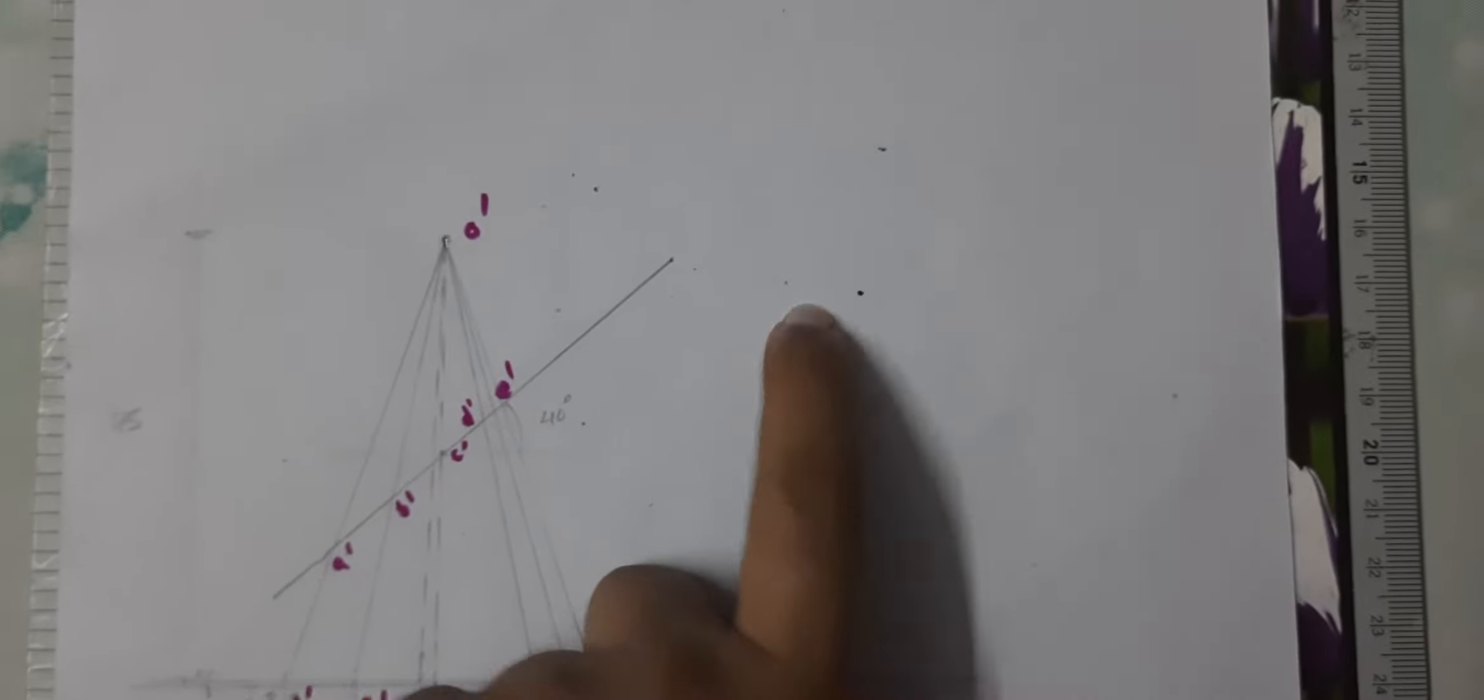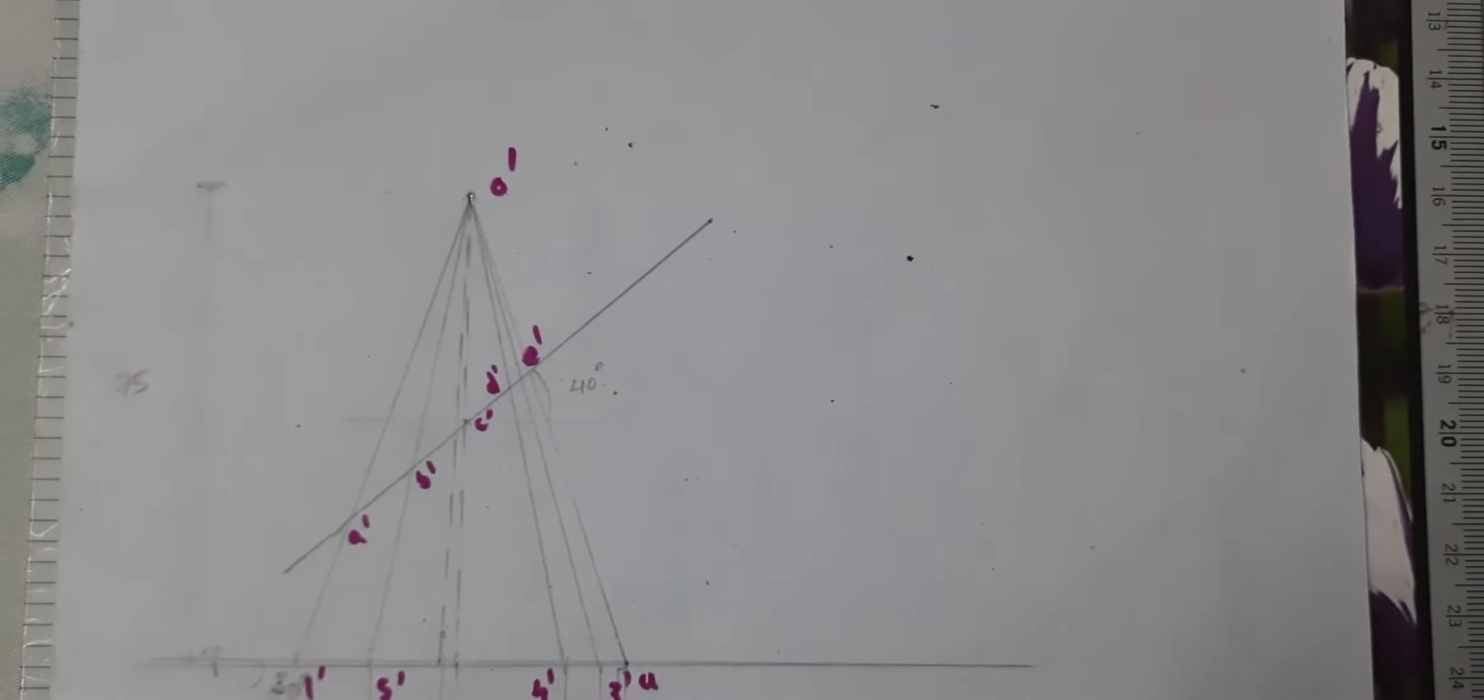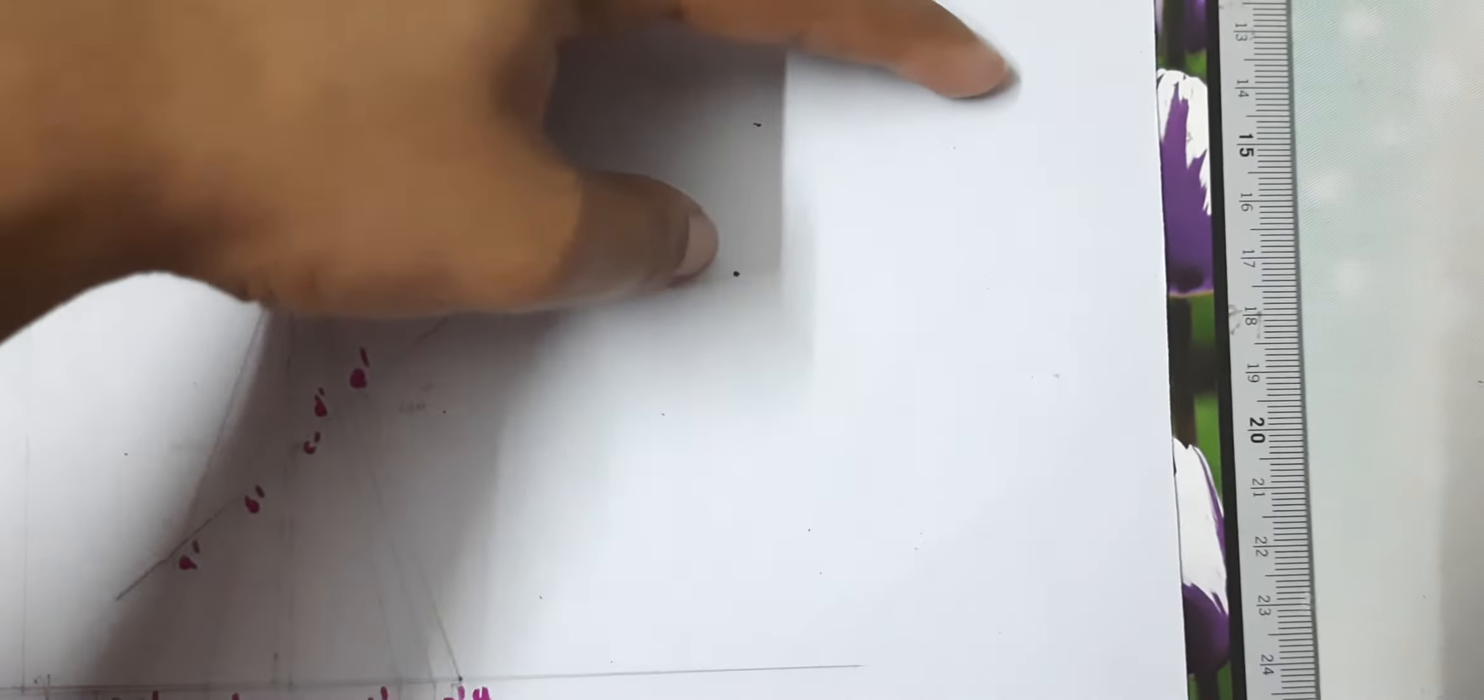When we get the true length, we are going to arbitrate the true length. When we get the true length, we get the arc.